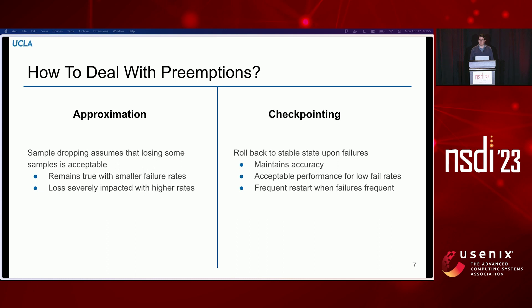There are some existing techniques which aim to address these preemptions — for example, approximation and checkpointing. Approximation says we can use a subset of our results and still achieve a good enough answer. At the end of every training step in machine learning, you typically have to average all the gradients collected from each worker. Approximation says when we experience a preemption, we can drop a subset of the gradients and still have an acceptable approximation. But as the number of preemptions rises, the trade-offs in accuracy can become unacceptable.